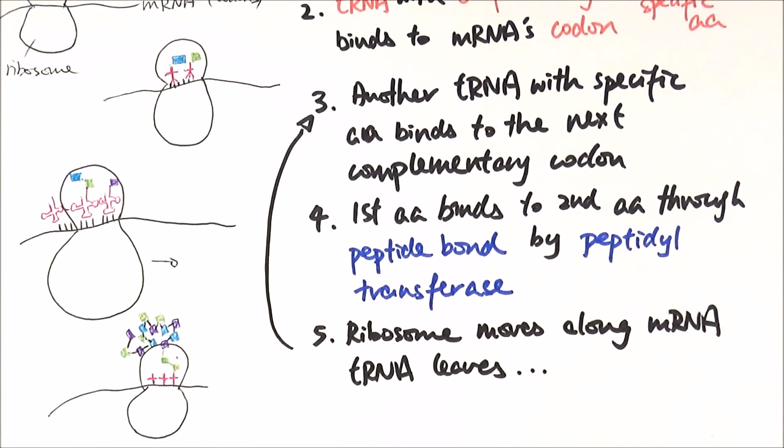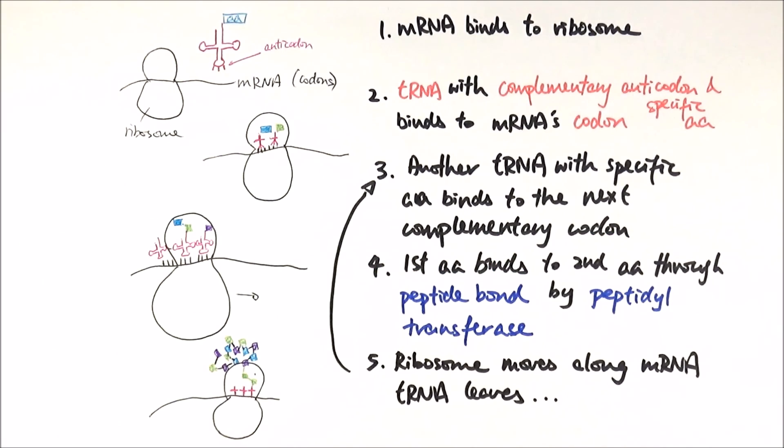The ribosome moves along the mRNA. The first tRNA leaves and the third tRNA with its amino acid binds to the next codon. This process continues until we reach the stop codon. As the amino acid chain leaves the ribosome, it curls up to form secondary or tertiary structure due to interactions with the environment. That's the process of translation.